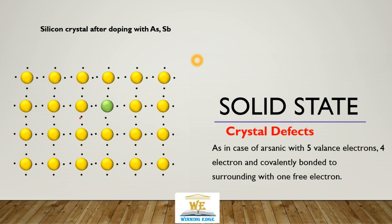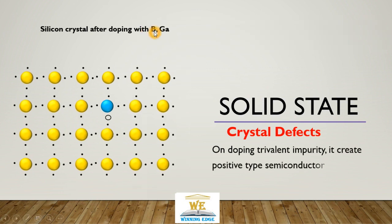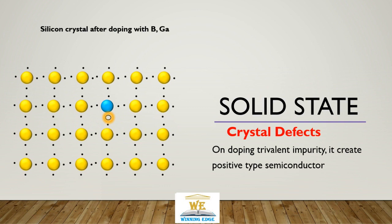There is another possibility: when we dope silicon with a trivalent impurity like boron or gallium, it creates a p-type (positive-type) semiconductor. Because we need 4 electrons but the trivalent atom has only 3, one empty electron position is created — known as a hole. This hole is considered a positive charge, although it is actually just the absence of an electron. So addition of trivalent impurities gives p-type semiconductors, and addition of pentavalent impurities gives n-type semiconductors.